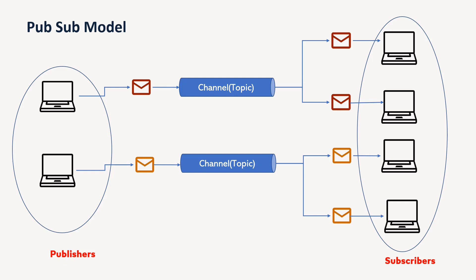Whenever a publisher publishes a message, it is up to the subscribers — whenever they have capacity, they can go to the topic and read the message and do the processing. The whole idea here is that the publisher and subscriber are decoupled and also highly scalable. For example, you can add more publishers or more subscribers at your will. This system is highly scalable and also highly decoupled — this is the main property of the pub-sub model.